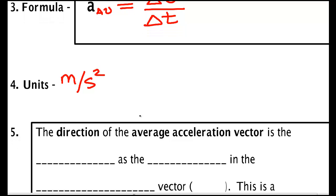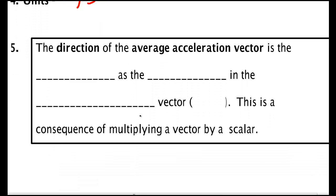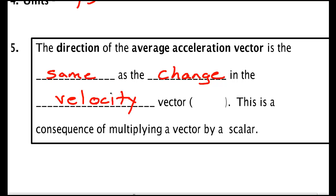To find the direction of the average acceleration — this is kind of like the trickiness of finding the average velocity — it is the same direction as the change in the velocity vector. So the way to find the direction of the average acceleration is to find delta v, and then you know the average acceleration points in the same direction. This is a consequence of multiplying a vector by a scalar. Note that change in velocity doesn't have a special name like displacement — it's just called change in velocity.